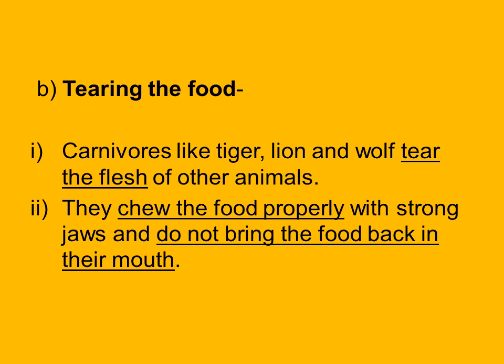Tearing the food is a process generally adopted by carnivores. Carnivores like tiger, lion, and wolf tear the flesh of other animals. They have sharp pointed front teeth, generally known as canines, with the help of which they can tear apart the flesh of the animal they have hunted.